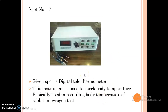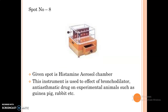The next spot is Digital Telethermometer. This instrument is used to check body temperature. Specifically, this instrument is used in recording body temperature of rabbit in the pyrogen test. The next instrument is Histamine aerosol chamber. This instrument is used to study the effect of bronchodilator anti-asthmatic drugs on experimental animals such as guinea pig, rabbit, etc.